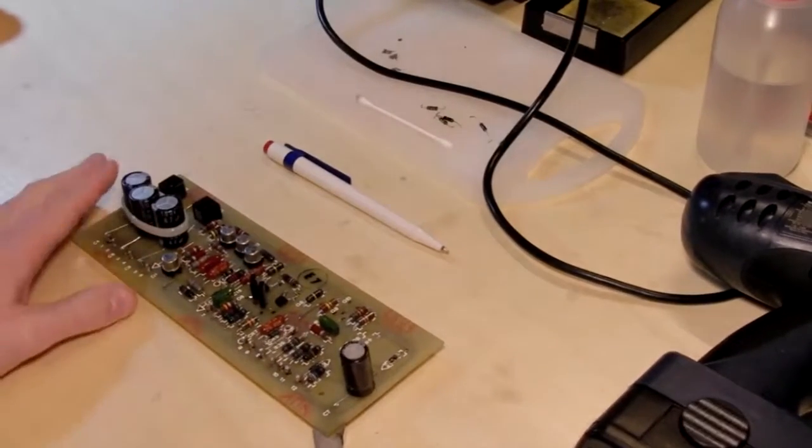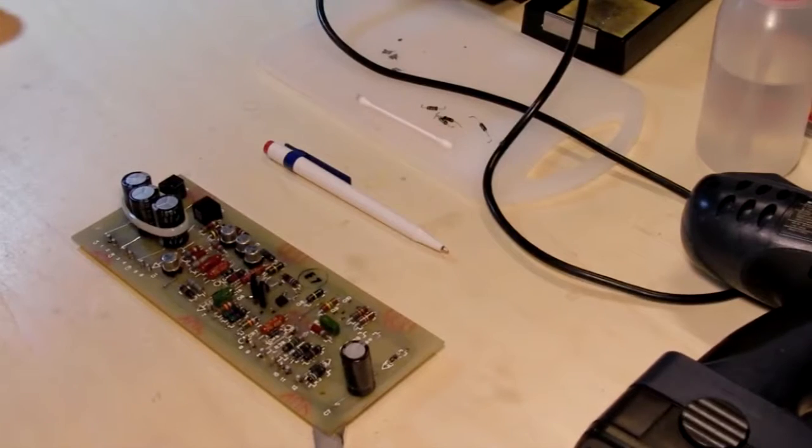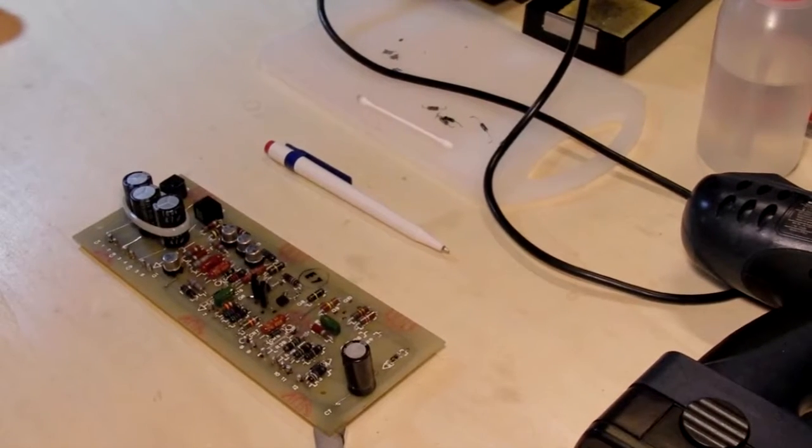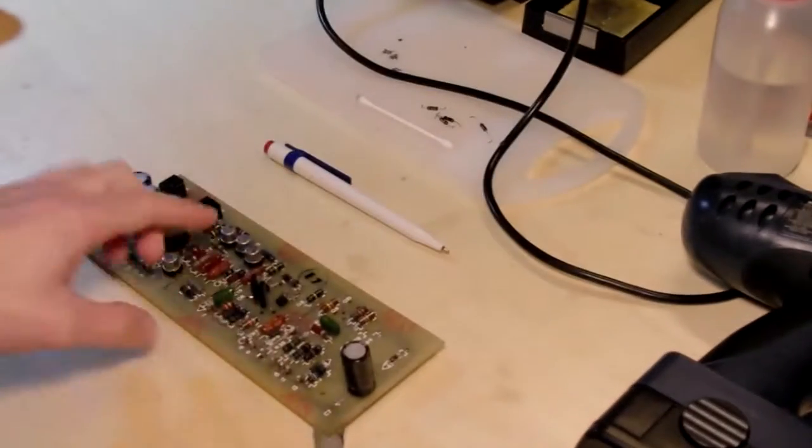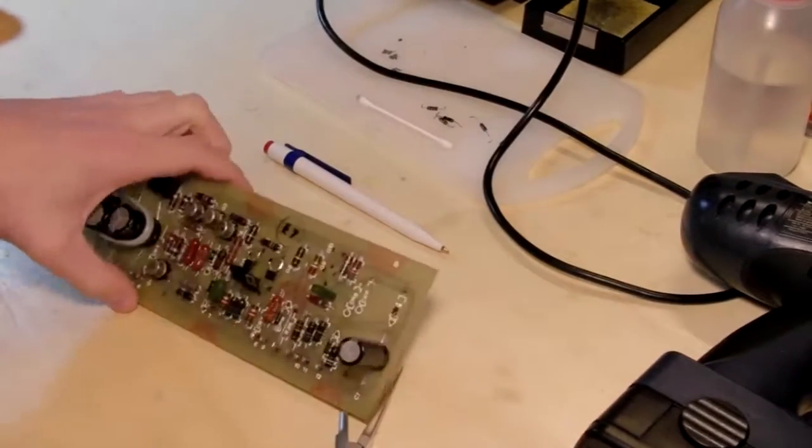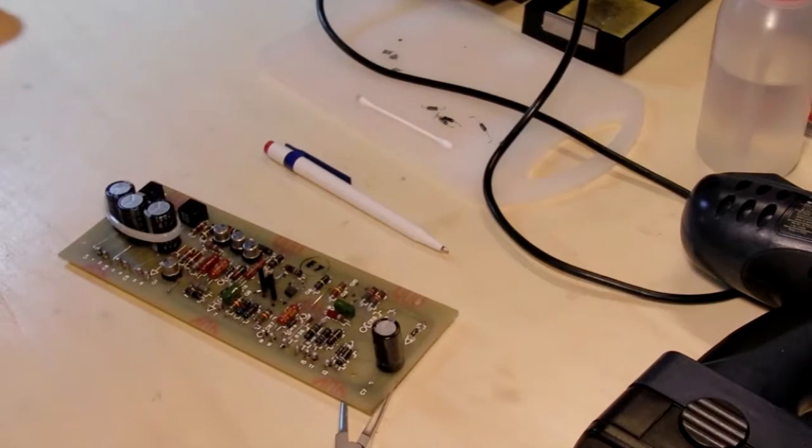So here we go. I checked the whole board. And I have written all the components I have to replace. So we have four diodes in total. One Zener and three rectifiers. And we have, what are they, six.